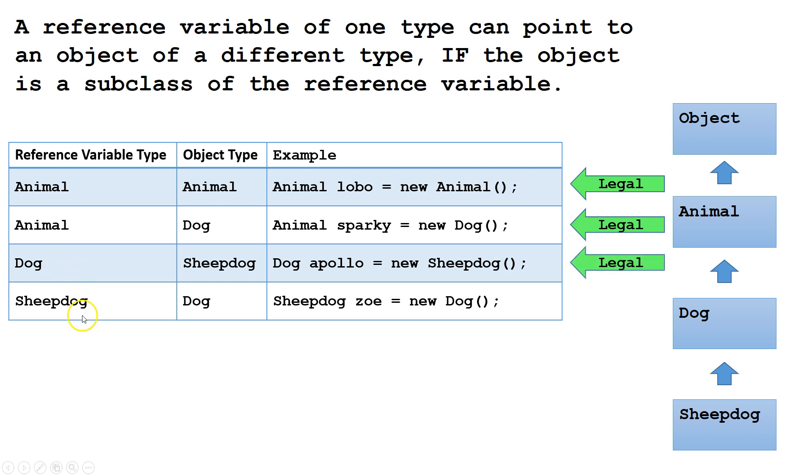Finally, let's look at this example. We have a reference variable Sheepdog and an object Dog. This is not legal because Dog is not a subclass of Sheepdog.